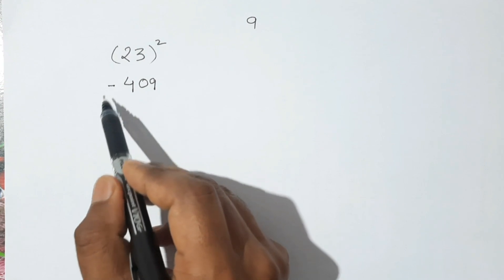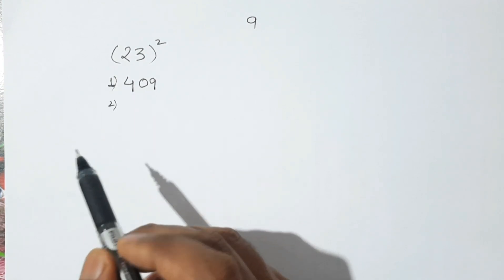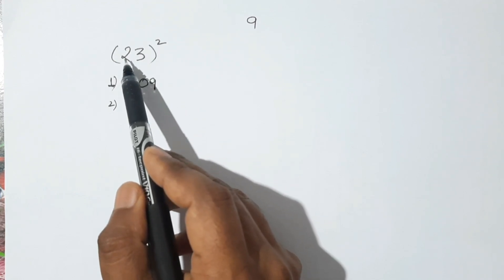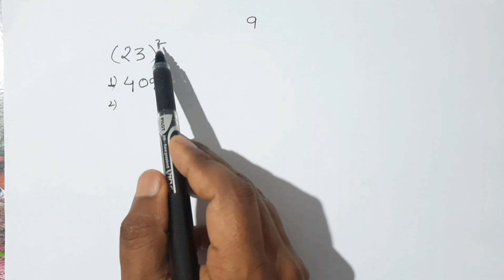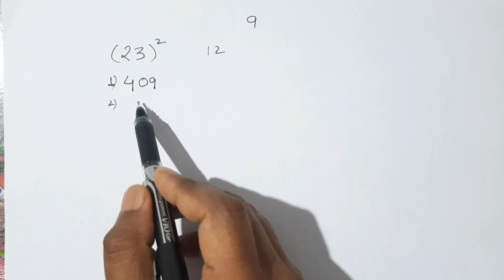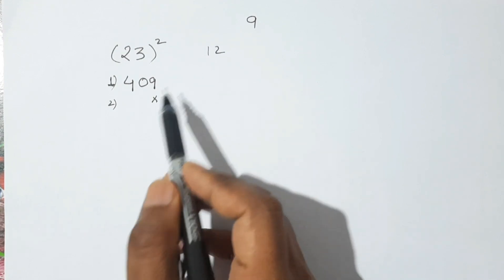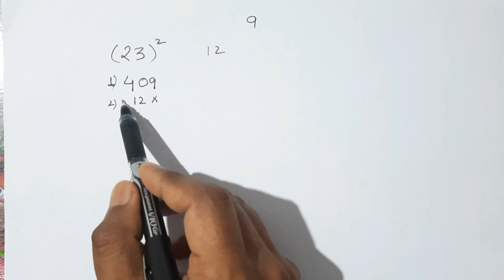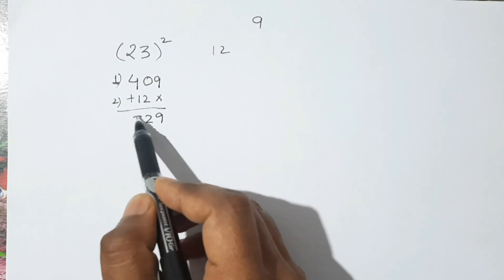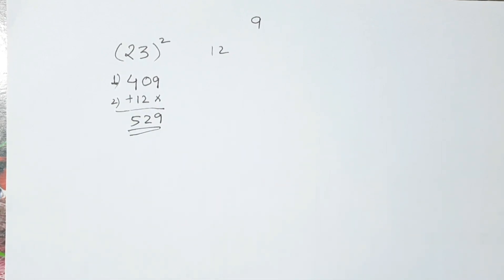Two square is four, so we write four as it is. That is our first step. Second step: we multiply all the digits — two into three is six, six into two is twelve. This 12 we add here, leaving one space empty. So adding, we get 529. This is the square of 23.